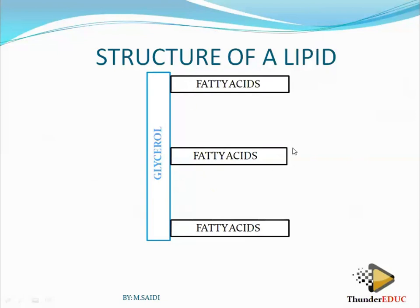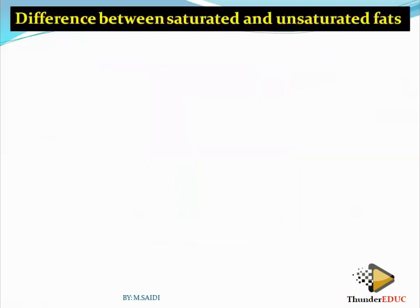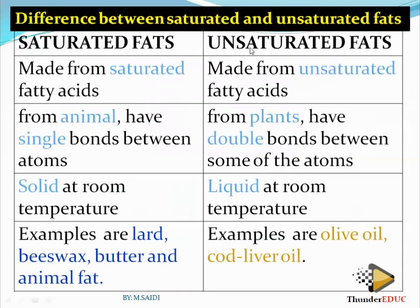This is the structure of a lipid. If they ask you to draw the structure of a lipid, you draw this — the diagrammatic representation is simply an E-shape: one glycerol and three fatty acids. Now we also have fats which are saturated and fats which are unsaturated.